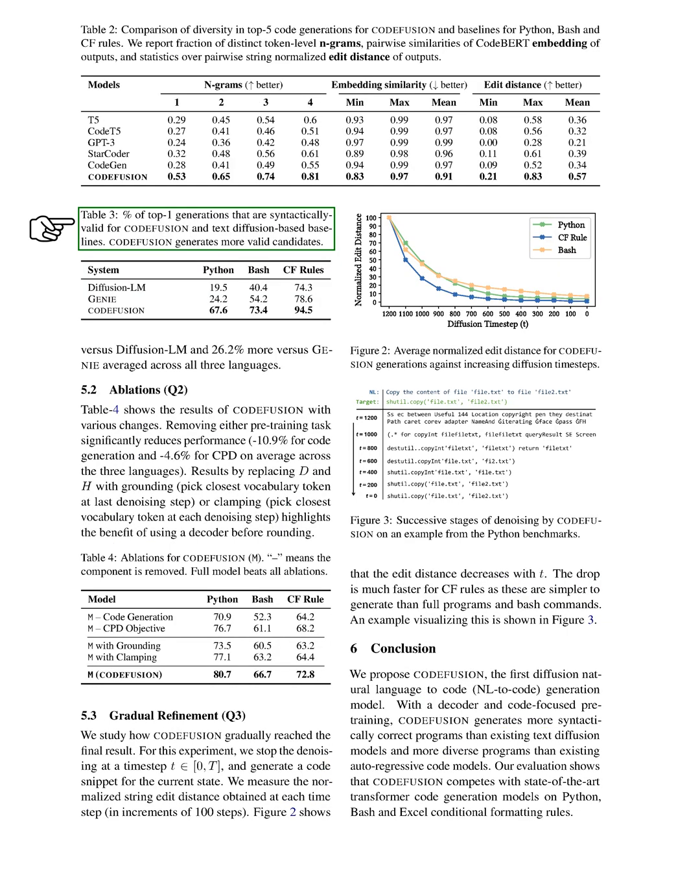We've included a table showing the percentage of syntactically valid outputs for our system and other diffusion models. Our system's outputs are more often syntactically valid compared to diffusion models not designed for code: 3.8% more compared to Diffusion LM and 26.2% more compared to Genie, averaged across all three languages.